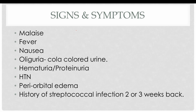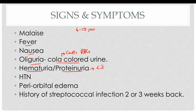Electron microscopy reveals humps of immune complexes within the mesangium and glomerular basement membrane. PSGN typically presents in the 6 to 10 year age group. The child presents with fever, nausea, oliguria (decreased urinary output), and cola-colored urine due to RBC casts. Hematuria and proteinuria are also present, with proteinuria typically less than 3.5 grams per day. Elevated blood pressure and periorbital edema may also occur due to decreased osmotic pressure causing fluid extravasation.